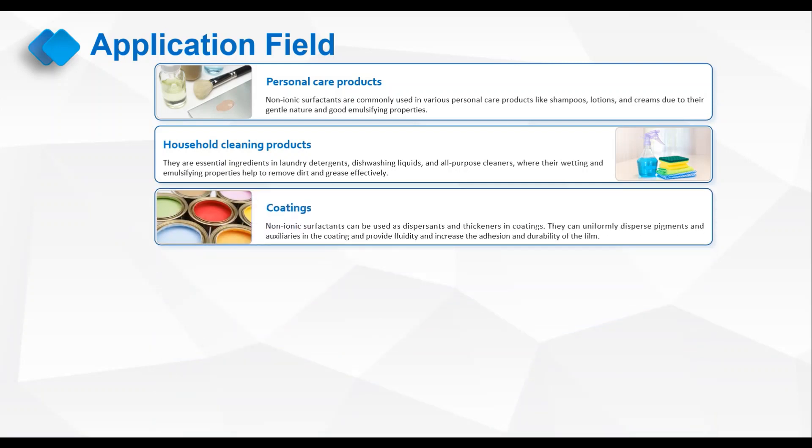Coatings. Nonionic surfactants can be used as dispersants and thickeners in coatings. They can uniformly disperse pigments and auxiliaries in the coating and provide fluidity and increase the adhesion and durability of the foam.